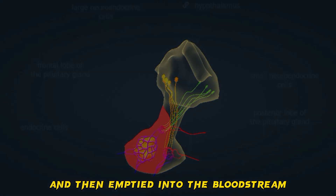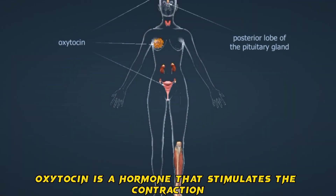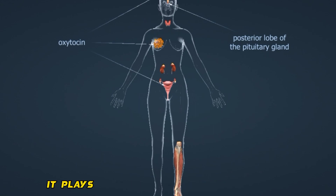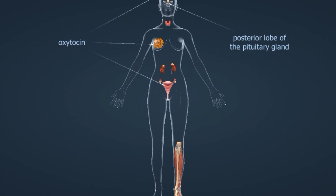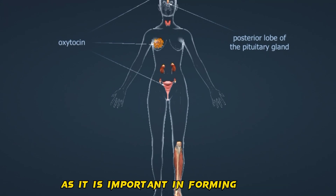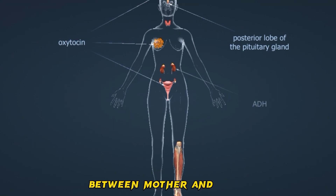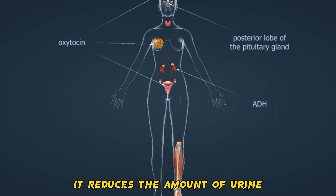ADH and oxytocin are emptied into the bloodstream. Oxytocin is a hormone that stimulates the contraction of smooth muscles. It plays an important role in childbirth and breastfeeding, and is often called the love hormone, as it is important in forming bonds between mother and child or in romantic relationships.